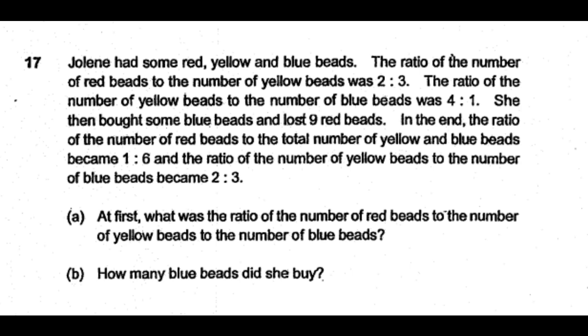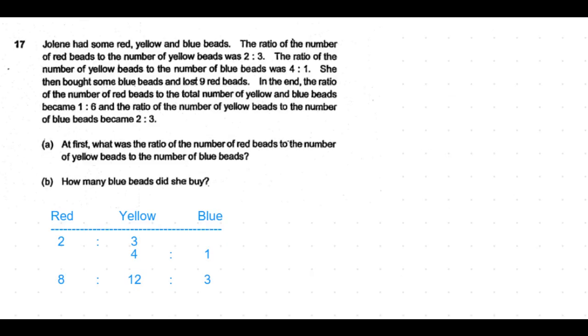This is a 5 mark question and part A carries 1 mark. This part A is very simple. Let's now mark down the ratio between the red and the yellow beads as 2:3, and the ratio between yellow and blue beads is 4:1.